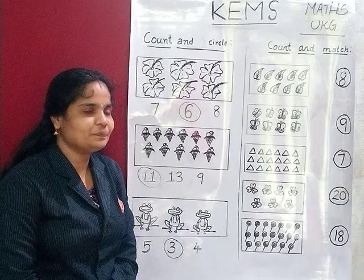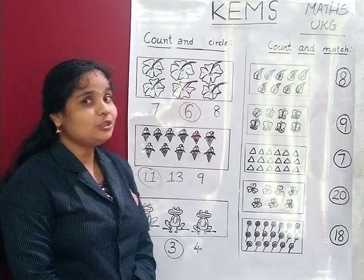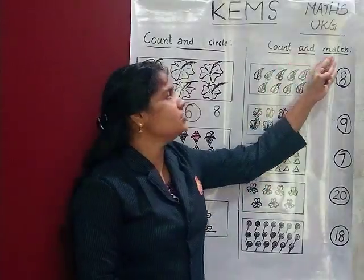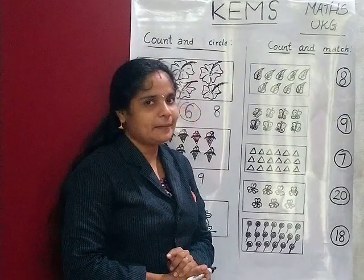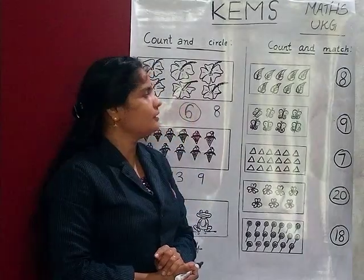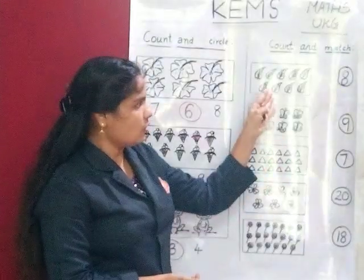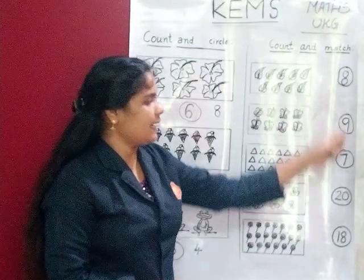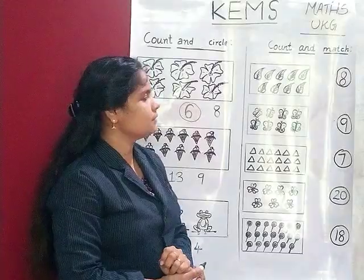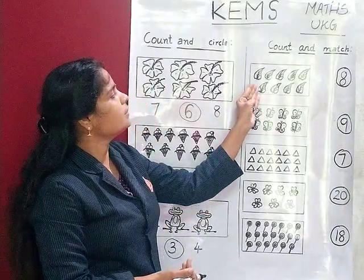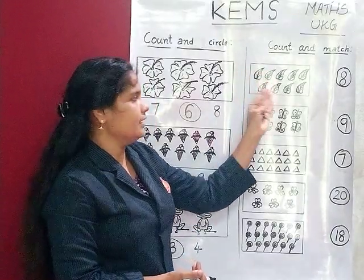Understood children? Very good. Then another topic — count and match. We count all the objects and match the number. Okay. Then let's count the leaves.